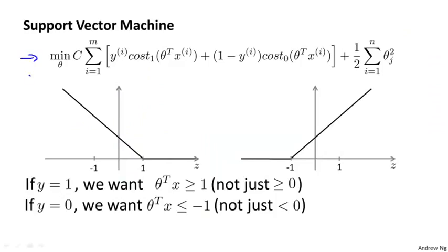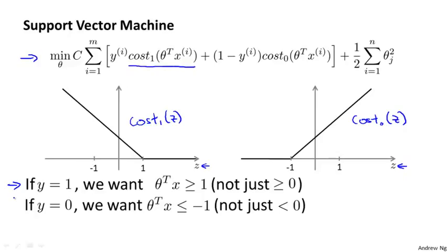Here's my cost function for the support vector machine, where on the left I've plotted my cost-one-of-z function that I use for positive examples, and on the right I've plotted my cost-zero-of-z function, where z is on the horizontal axis. Now let's think about what it takes to make these cost functions small. If you have a positive example, so if y is equal to one, then cost-one-of-z is zero only when z is greater than or equal to one.